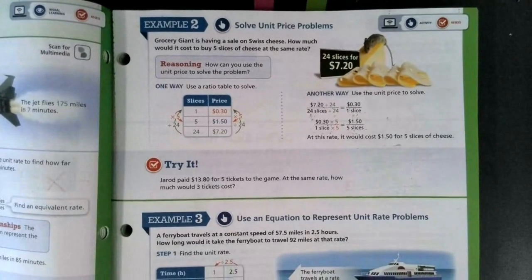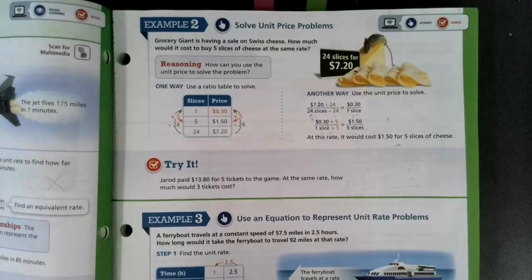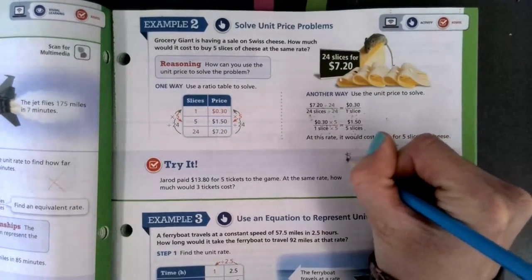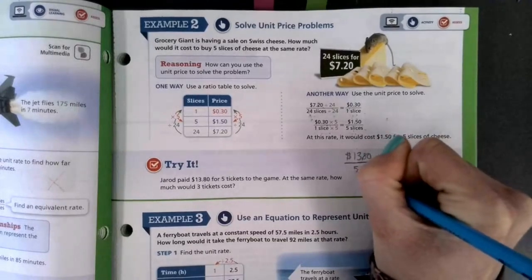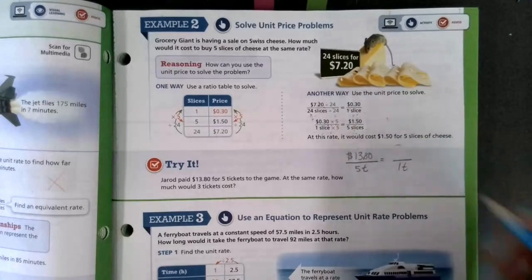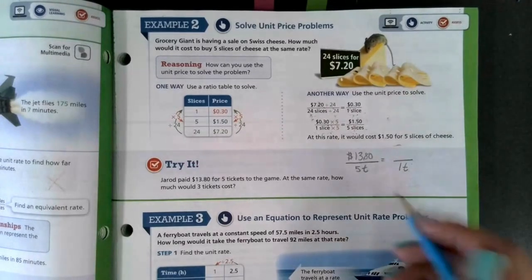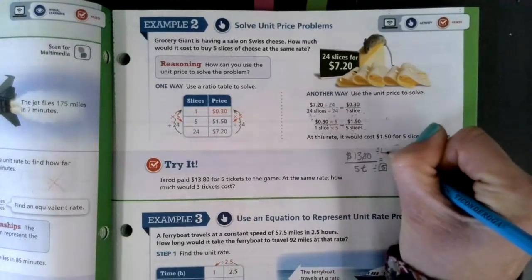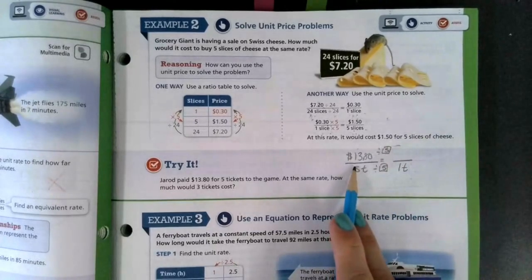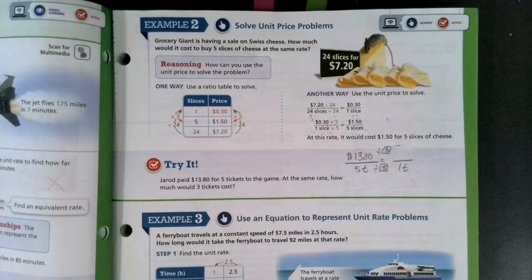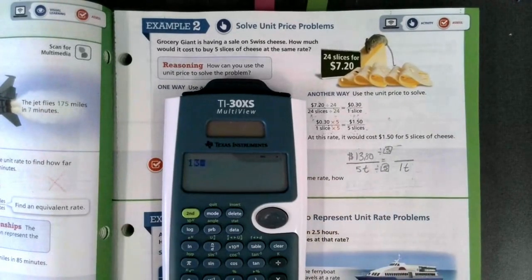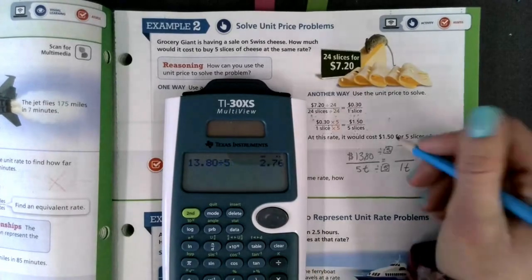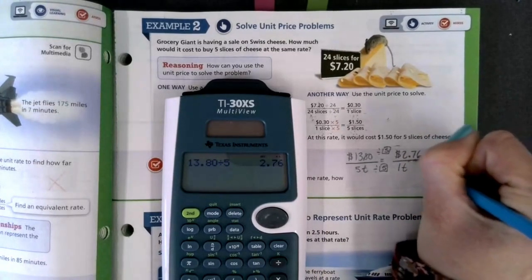Let's try it. Jared paid $13.80 for five tickets to the game. At the same rate, how much would it cost for three tickets? So we're going to start with our rate that it gives us, $13.80 for five tickets. I want to find the unit rate for one ticket. So I'm going to set it up equal to one ticket. I'm going to take my five divided by five. I know it will get me to one. If I do the same thing on top, now I'm solving $13.80 divided by five. I'm going to let you use calculators to speed it up. So $13.80 divided by five gives us a unit rate of $2.76.